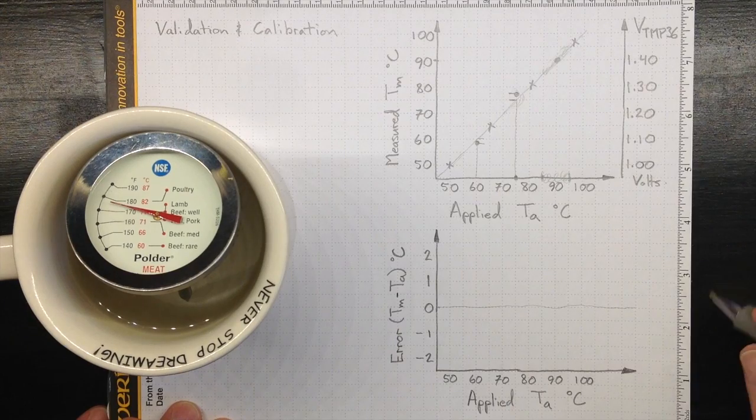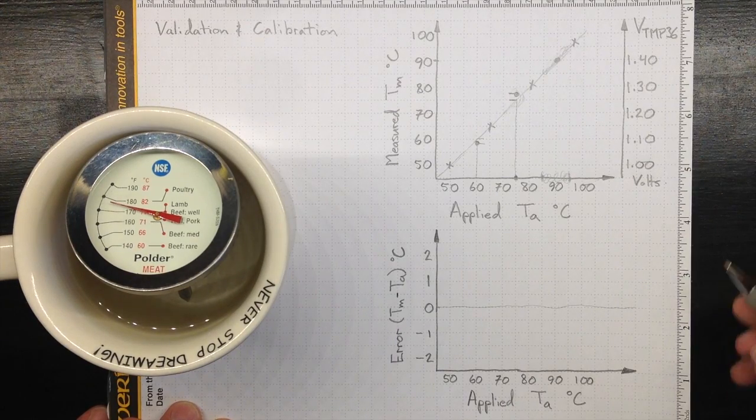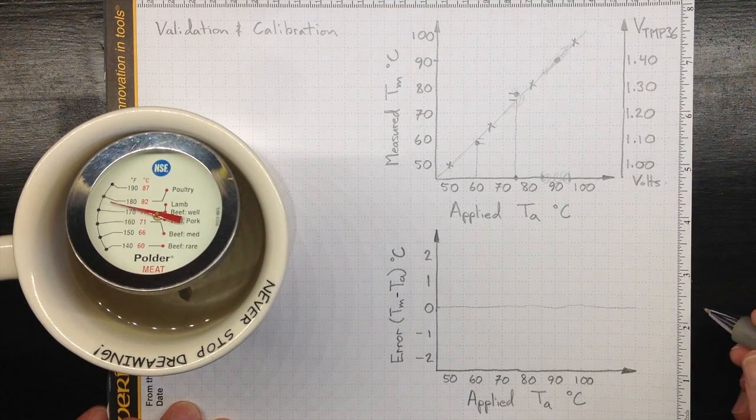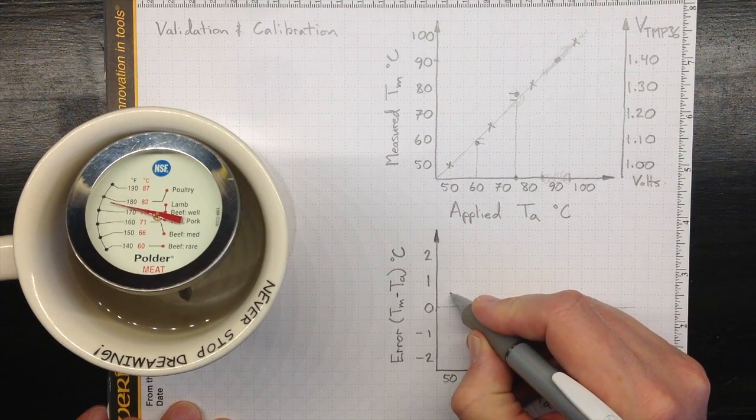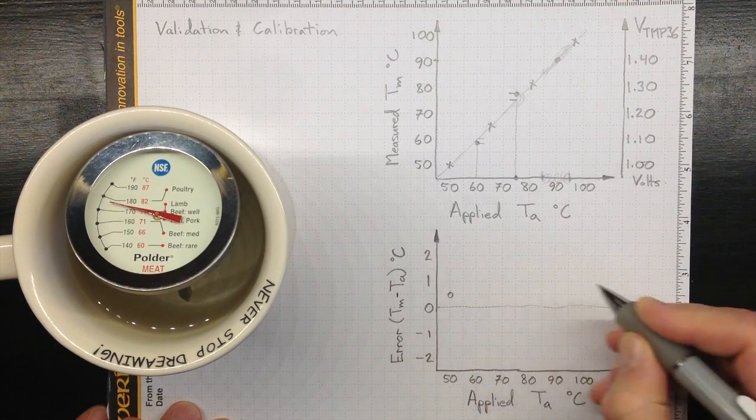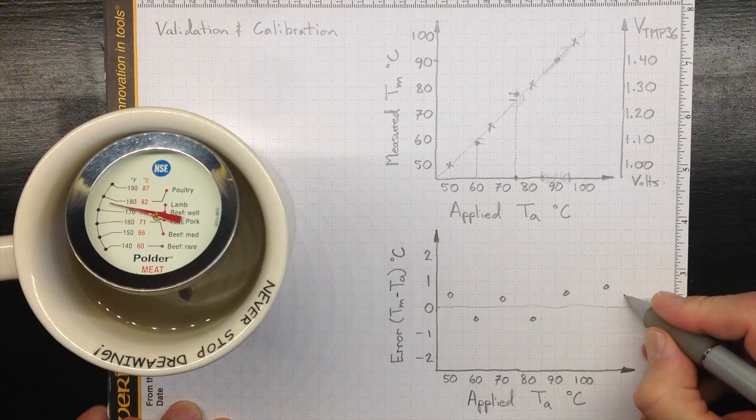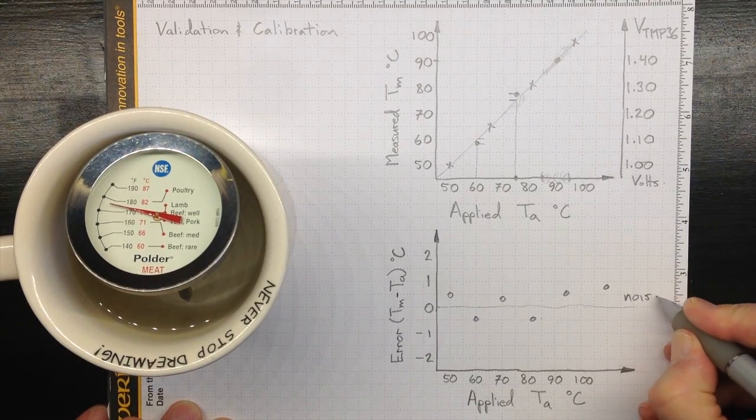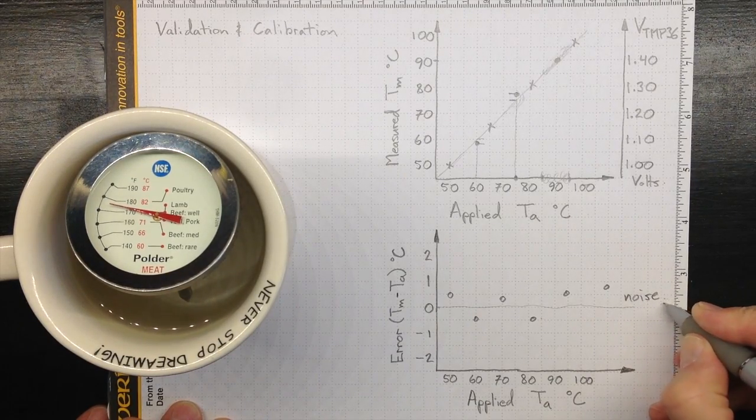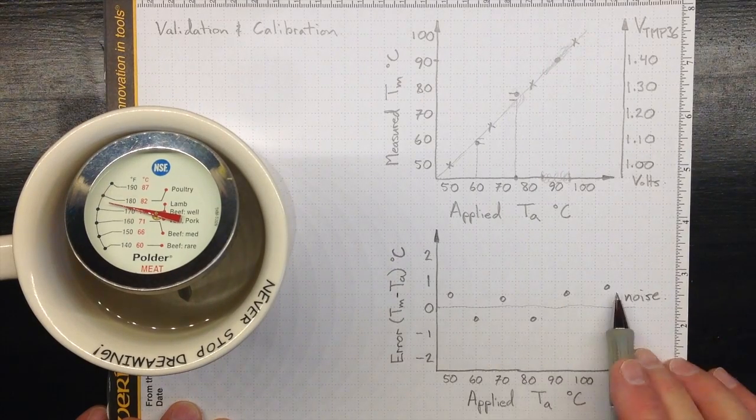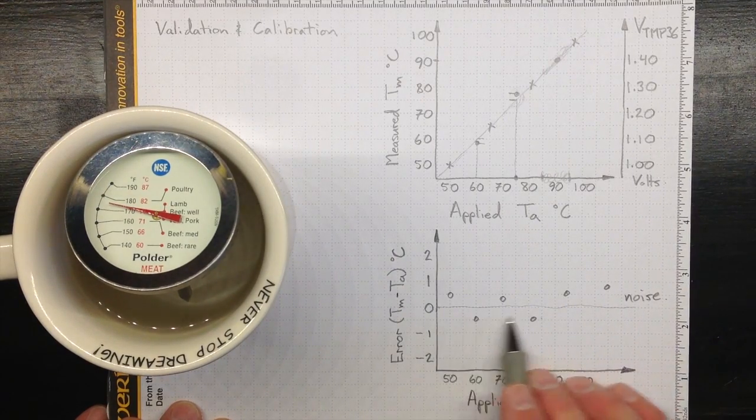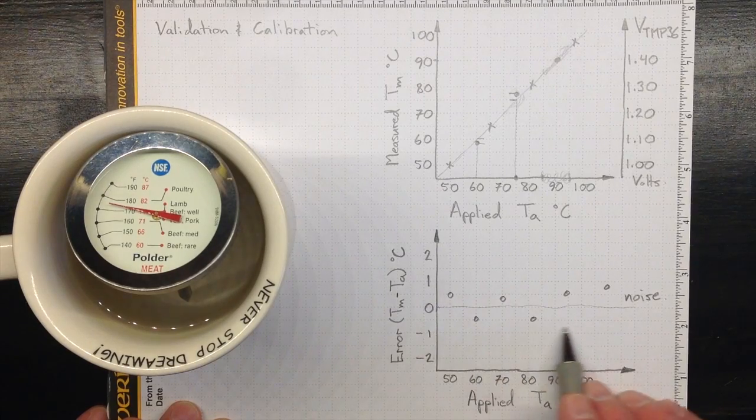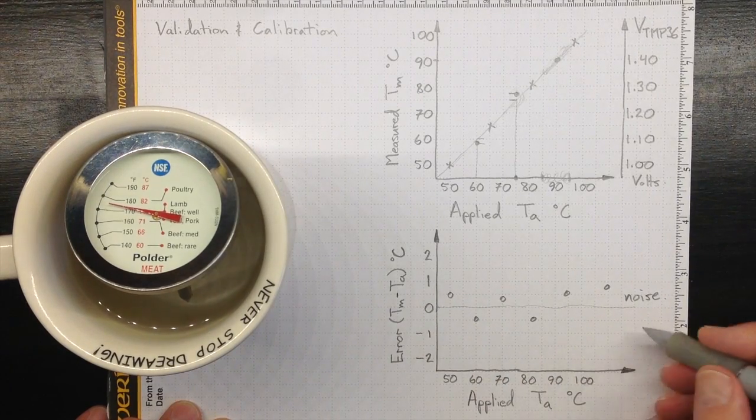However, our measurement isn't going to be perfect. Inevitably, there's going to be some noise. So, we might actually find that our data points look something like this. This tells us that our calibration, our instrumentation, is pretty good. But, we've got some noise, and all of our data points are still within plus or minus one degree Celsius. So, that's pretty good.